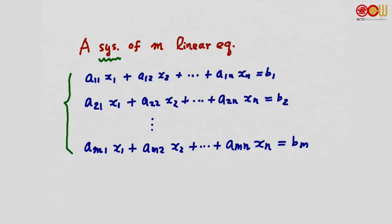You probably have already seen systems of linear equations before and learned how to solve them. The method used to solve such a system is named after a person — Gauss — and it's called Gaussian elimination.